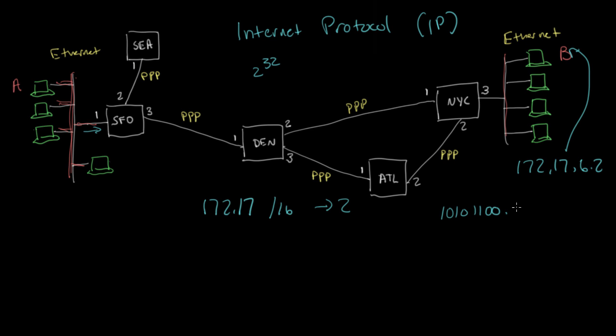And then 17 is going to be 0, 0, 0, 1, 0, 0, 0, 1. The 6 is 0, 0, 0, 0, 0, I'm running out of room. Let me just move this over and make myself a little bit more room.